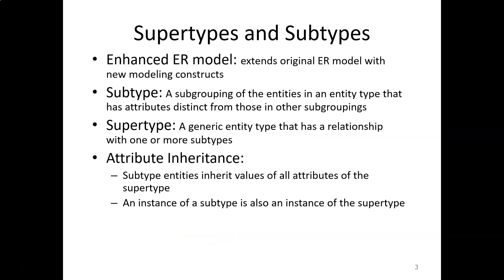The supertype and subtype situation is very common in business. For example, in a university, you have students as an entity type, and within that entity type you have graduate students and undergraduate students. Graduate students may have unique attributes different from undergraduate students. A supertype is a generic entity type that has a relationship with one or more subtypes — students would be a supertype. A subtype is a subgrouping of entities that has attributes distinct from those in other subgroupings, so undergraduate and graduate students are two examples of subtypes.